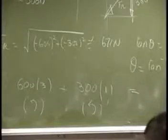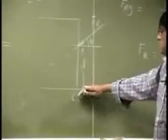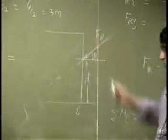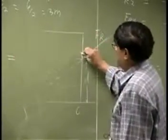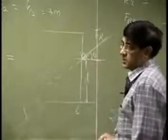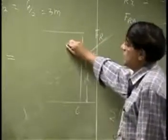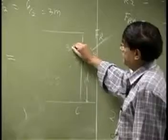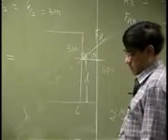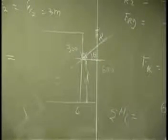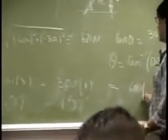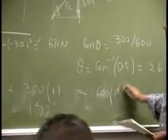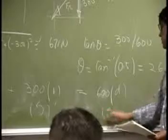This has to be equal to the moment of this. So we are looking at this component and this component. This component is 300. This component is 600. This goes right through this, so 0 moment. This one is going to give you a moment. That is 600 D and that is also clockwise.